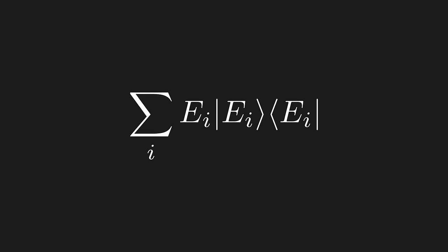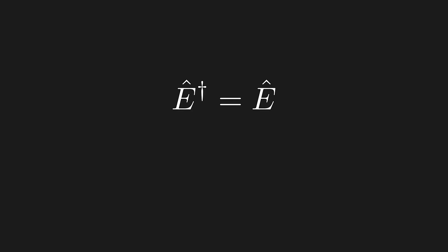And check it out, we get the exact same operator back. So, we've just proven that the Hermitian adjoint of a physical observable is itself.